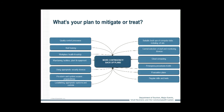Insurance is one method of sharing risk. You pay an insurance premium rather than run the risk of not being protected against the possibility of a much larger loss. In business insurance, you can decide which exposures you absolutely must insure against and which ones you can cover yourself.